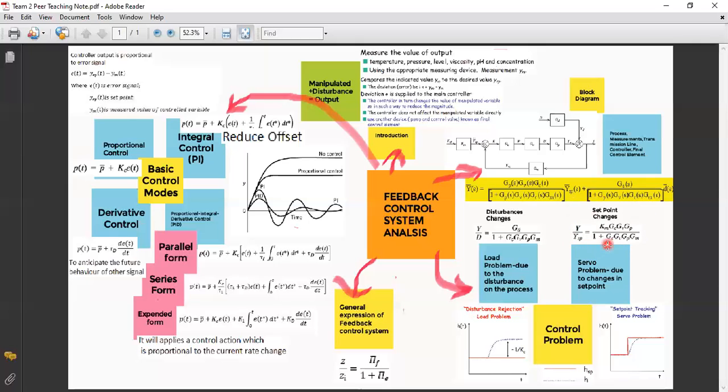As for load problem, the examples are like temperature, pressure, concentration, moisture and pH. And as for the servo problem, which is also known as set point tracking, the examples are like satellite navigation, radio control, robot.